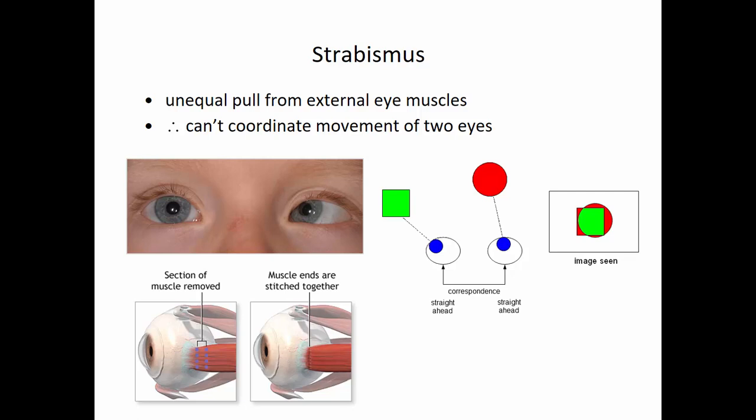Strabismus is an extrinsic eye muscle issue — not a problem with how light enters the eye, but with the muscles controlling the eyeballs. If there is unequal pull in two different eyes, a child can't coordinate the movement of those two eyes, so the two eyes are not focused on the same image. It's important to correct because the visual cortex is still developing right after birth, and the brain may stop recognizing signals from the deviating eye, causing blindness in that eye. Kittens that had one eye patched at birth became functionally blind even though the eyeball itself was functioning normally — because the visual cortex didn't receive normal visual input to create the necessary brain pathways.